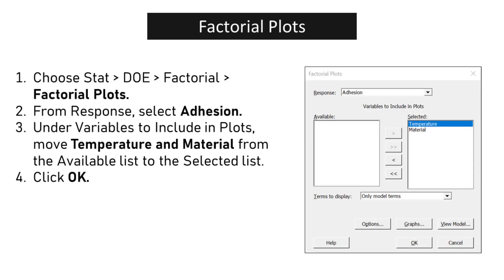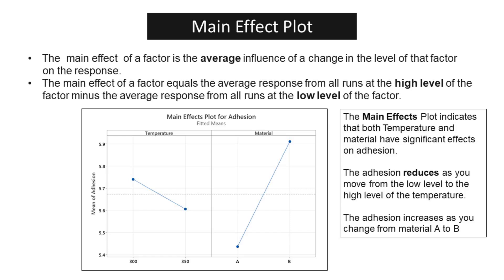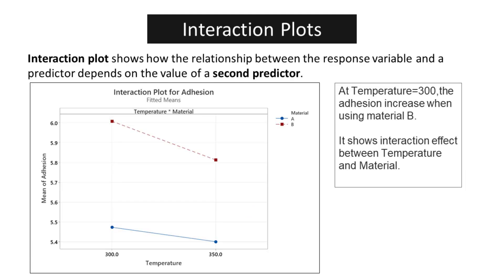The factorial plot in Minitab provides a clear graphical representation of the main effects and interaction effects of each factor in the design. Choose STAT > DOE > Factorial > Factorial Plots. From response, select Adhesion. Under variables to include in plots, move Temperature and Material from the available list to the selected list. Click OK. The main effects plot indicates that both temperature and material have significant effects on adhesion: adhesion reduces as you move from the low to the high level of temperature, and adhesion increases as you change from material A to B. The interaction plot shows that at temperature equals 300, adhesion increases when using material B, indicating an interaction effect between temperature and material.